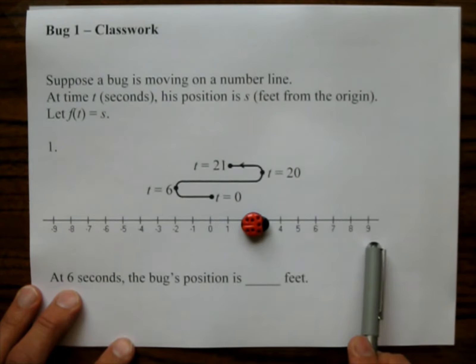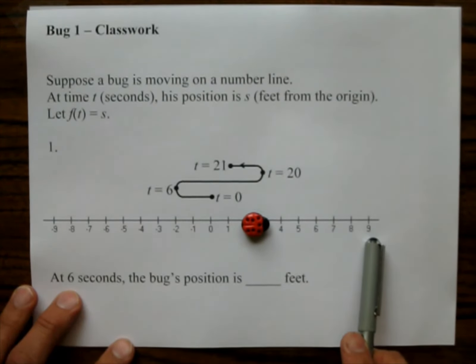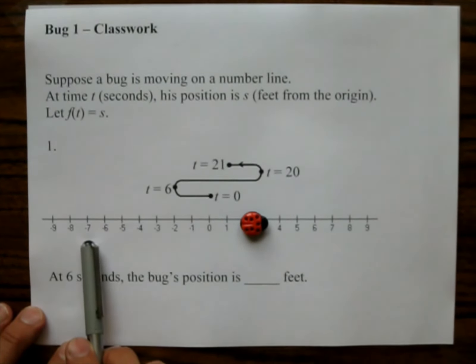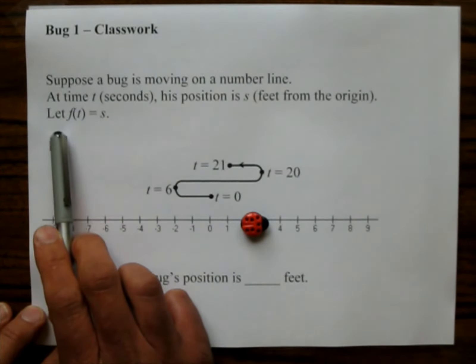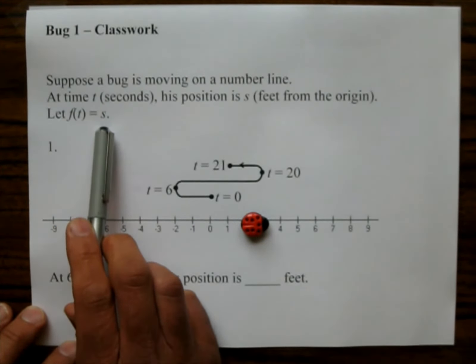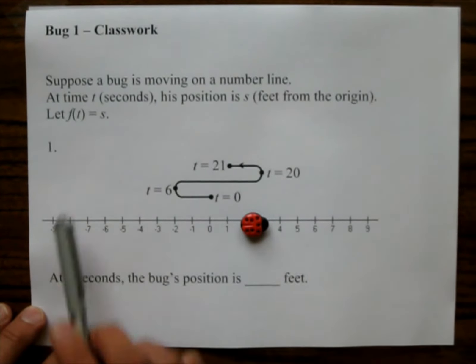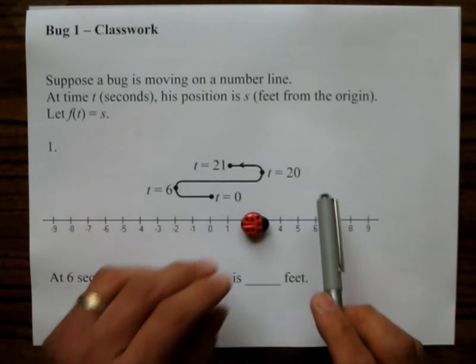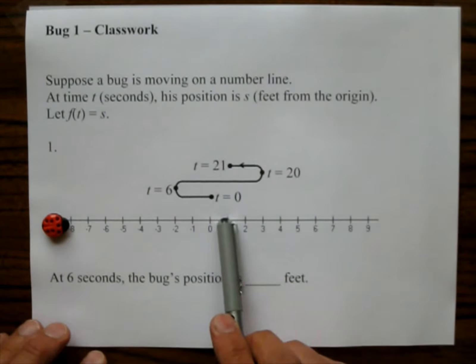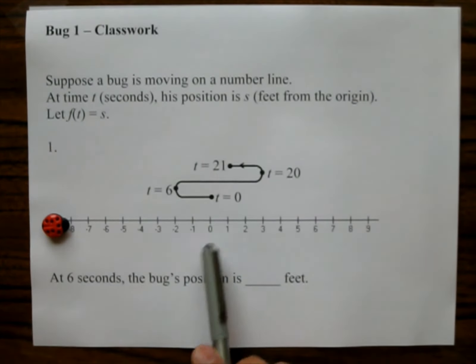s represents the feet from the origin. So when he's over here at 9, his position is 9. When he's over here at negative 7, his position is negative 7. Let f(t) equal s. And we'll get into that when we answer this question here. So let's just look at what's happening with the bug here.